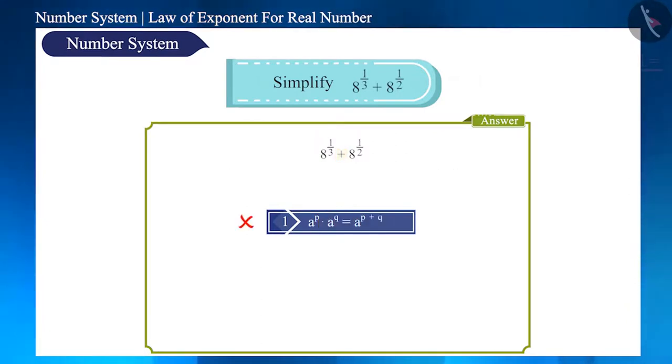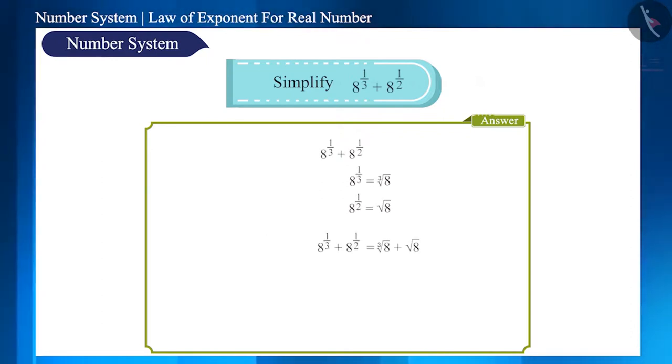But this question has a sign of addition here, so we cannot use this exponential rule to simplify it. We can write it in this way: the cube root of 8 is 2, and the square root of 8 is 2 root 2. We can write it as 2 multiplied by 1 plus root 2.